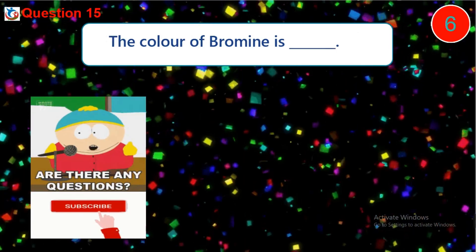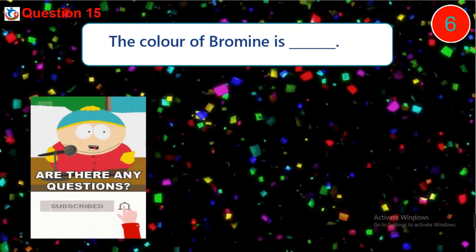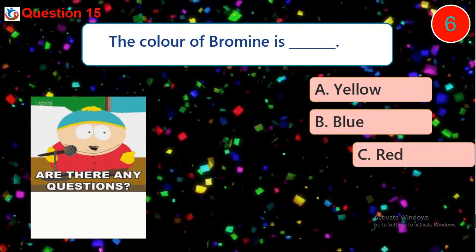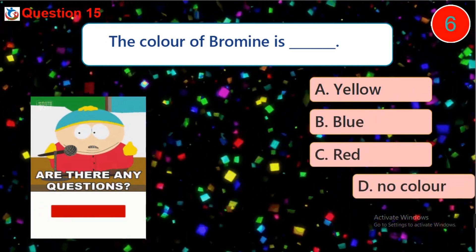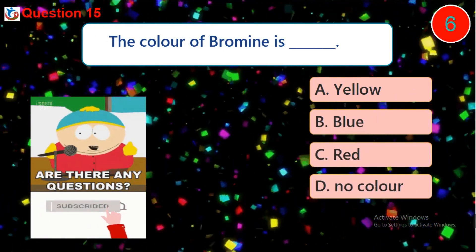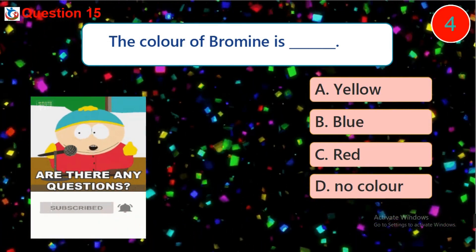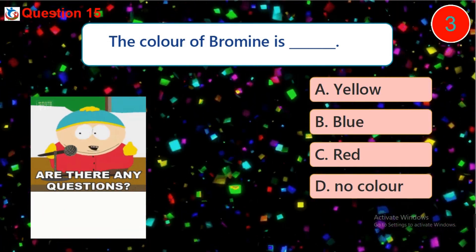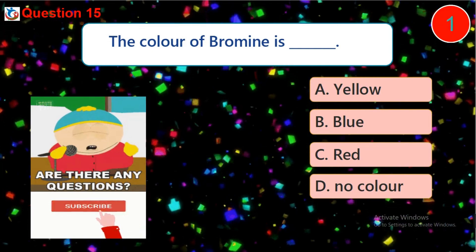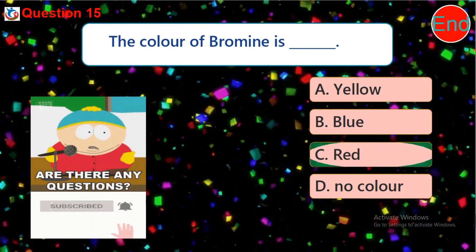Question fifteen: the color of bromine is dash. A. yellow, B. blue, C. red, D. no color. Answer: C. red.